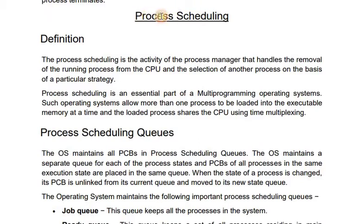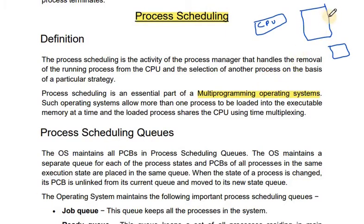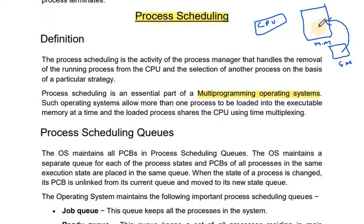Next, we are going to discuss process scheduling. In a multi-programming operating system, process scheduling comes in. We have already seen the architecture of a system: main memory, secondary memory, and CPU. For a uniprogramming operating system, there is a single program in main memory, so there is no need for process scheduling. But in a multi-programming operating system, there are several programs based on the memory capacity.